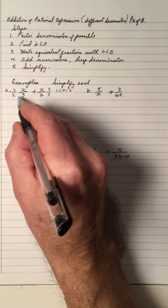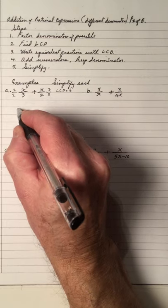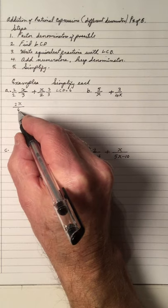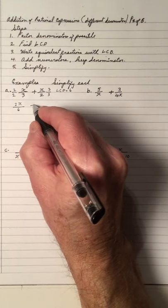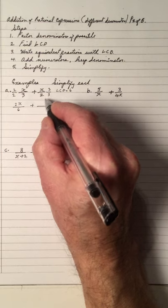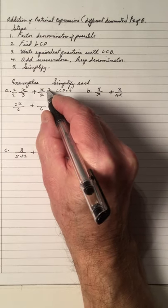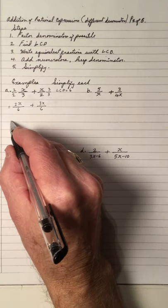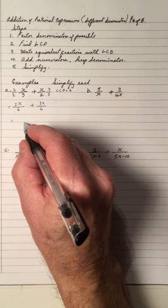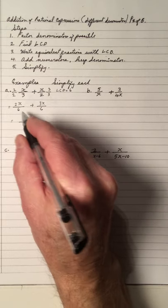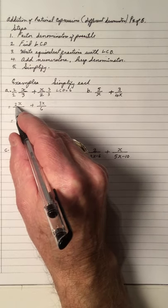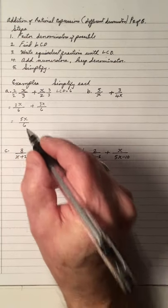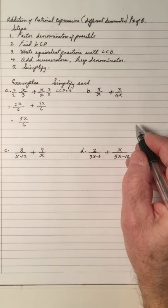Keep the balance and multiply. 2 times 3 is 6, and 2 times x is 2x — that's an equivalent fraction with a denominator of 6. Keep the denominator of 6, and add the numerators: 2x plus 3x is 5x. So we get 5x over 6, which cannot be simplified further.